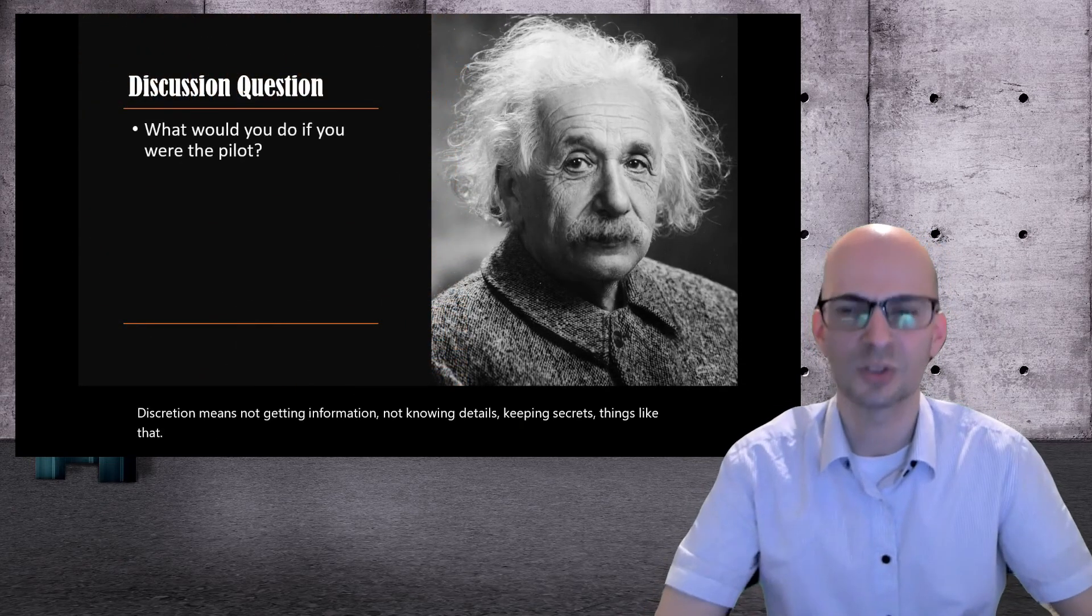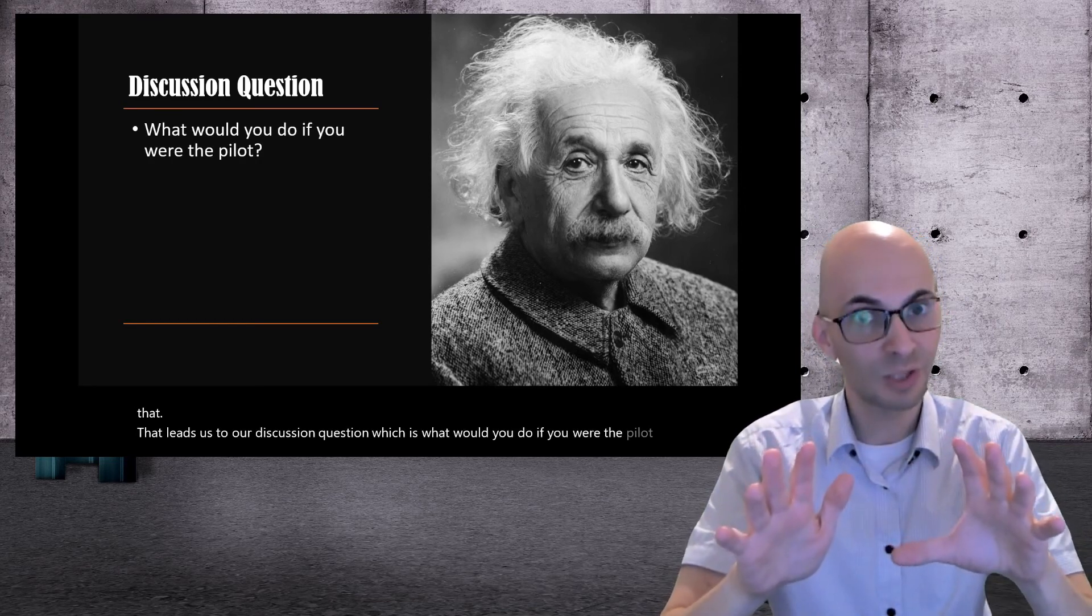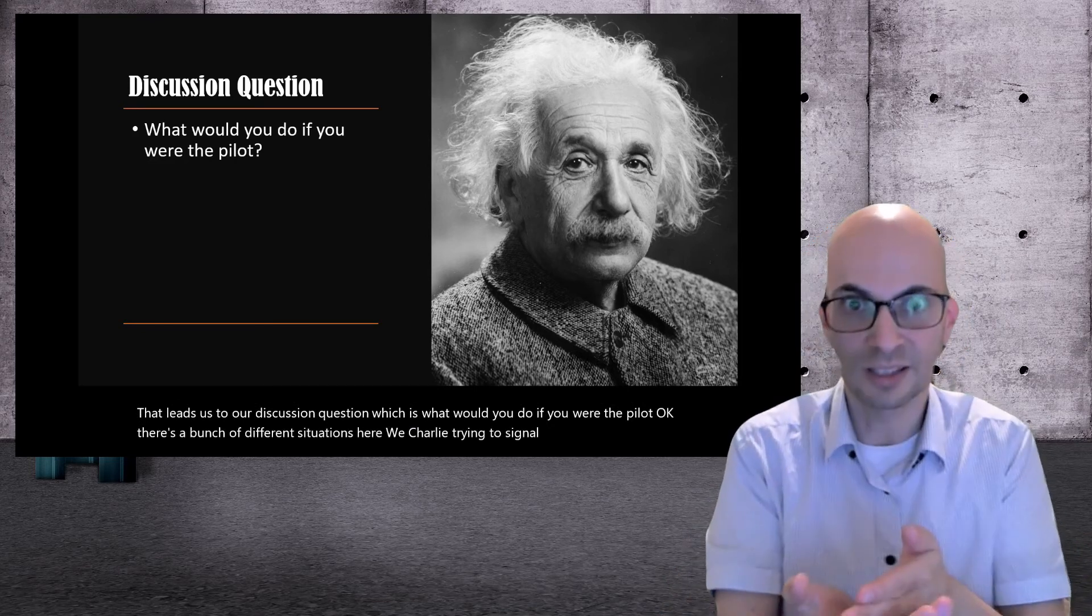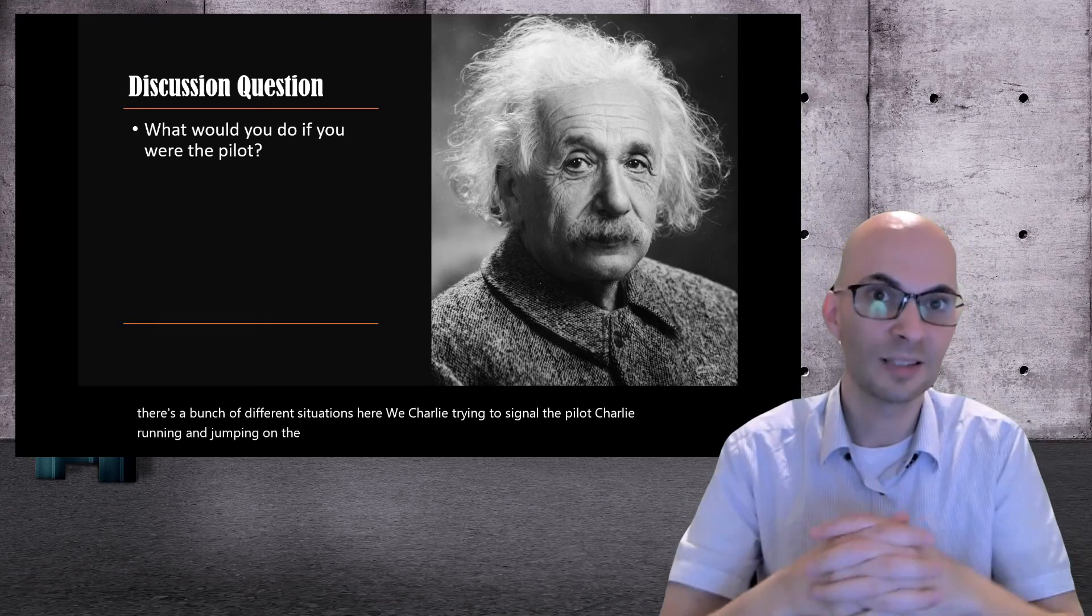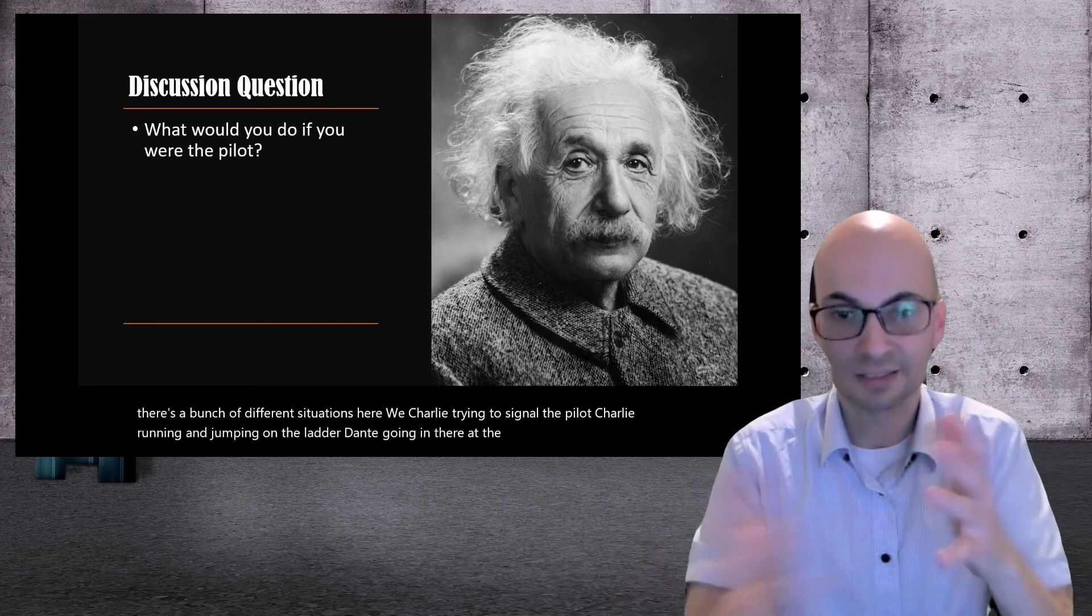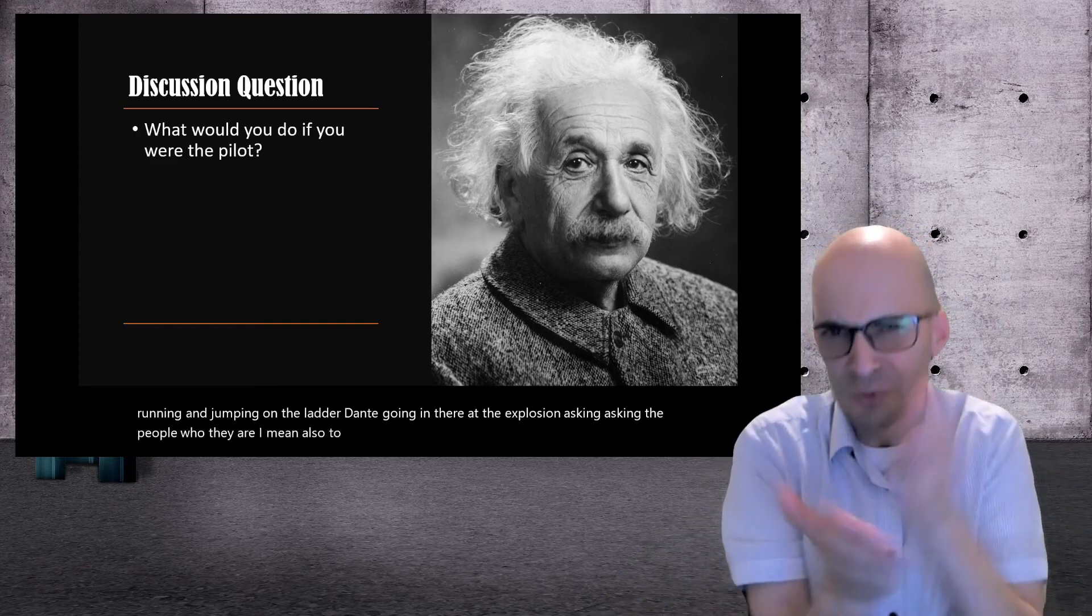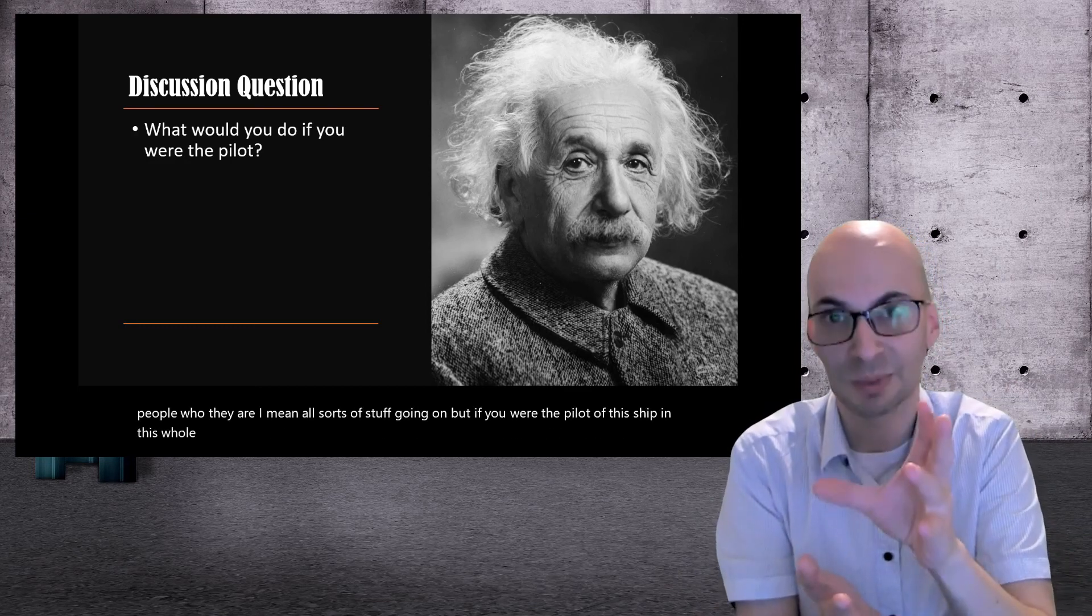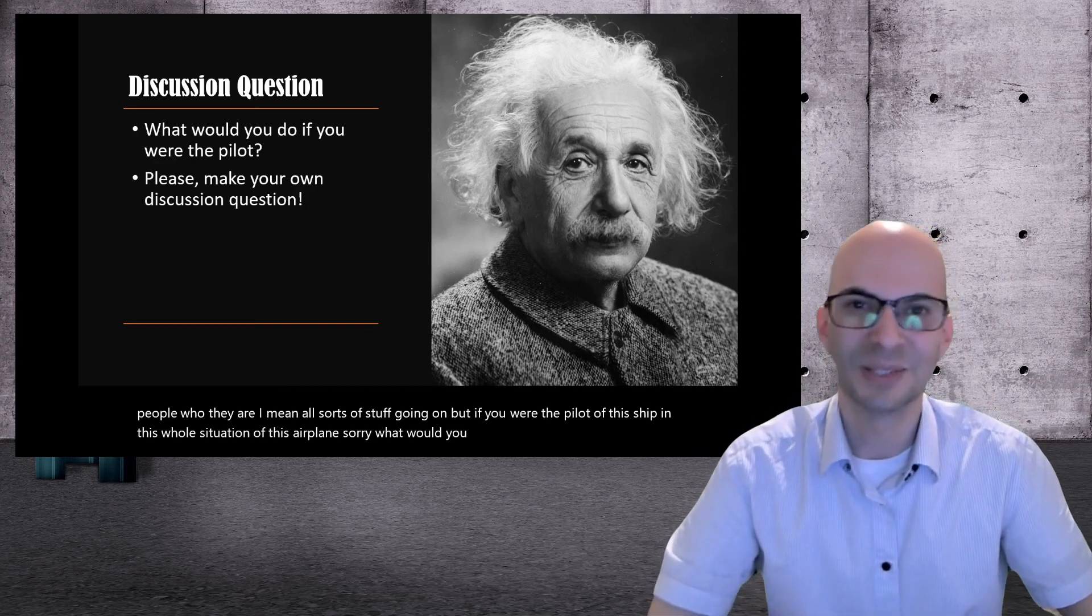That leads us to our discussion question, which is what would you do if you were the pilot? There's a bunch of different situations here with Charlie trying to signal the pilot, Charlie running and jumping on the ladder, Dante going in there, the explosion, asking the people who they are. I mean, all sorts of stuff going on. But if you were the pilot of this airplane in this whole situation, what would you do? And of course, please make your own discussion question.